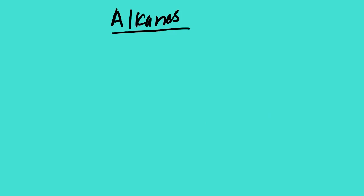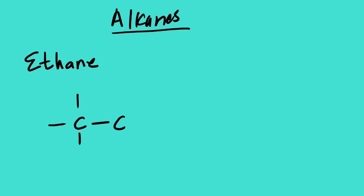Our second compound is ethane, which consists of two carbons. Remember that carbon is tetravalent — it has the ability to bond four times. Alkanes consist of only single bonds, and those single bonds are between carbons, not carbon and hydrogen. This is the Lewis structure of ethane.